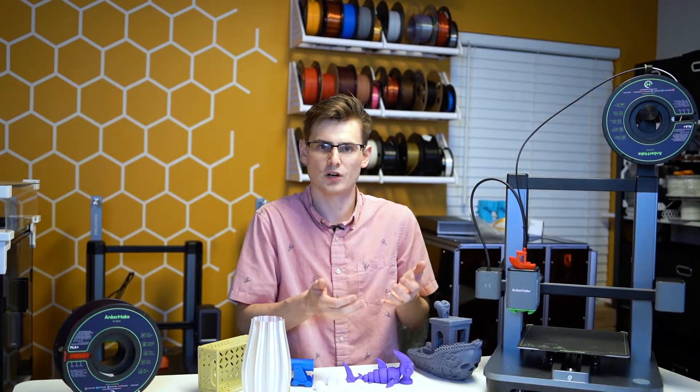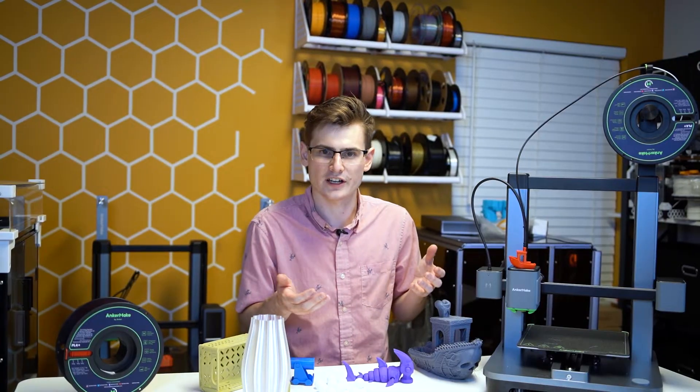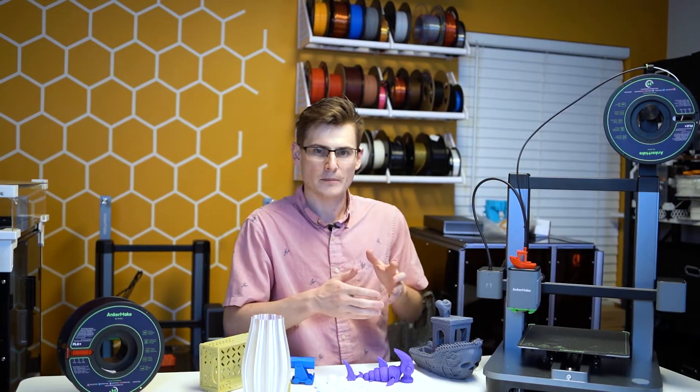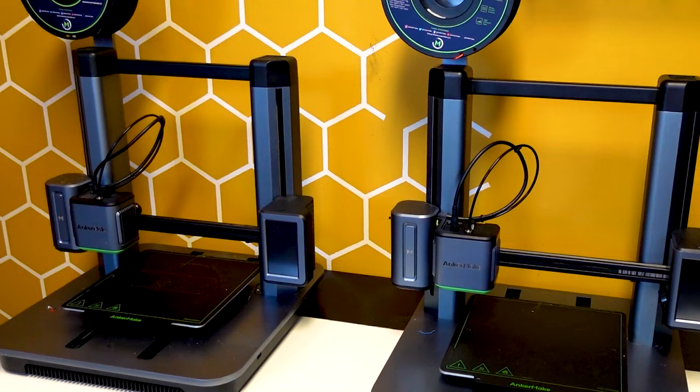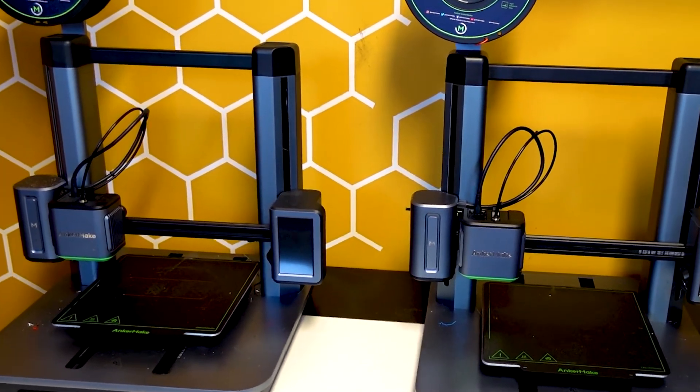Obviously, I would prefer the M5C to run on linear rails or rods, but considering the price point of this machine, I can completely understand why AnkerMake didn't implement that. On my M5, I haven't dealt with flat spots on the wheels, so I'm going to remain optimistic with these V-rails.